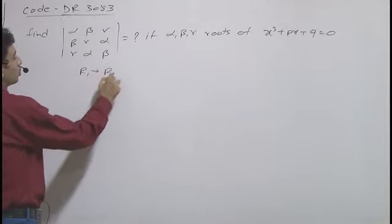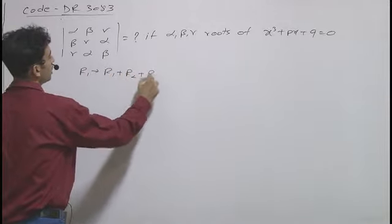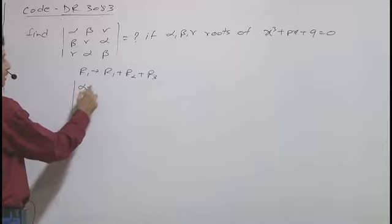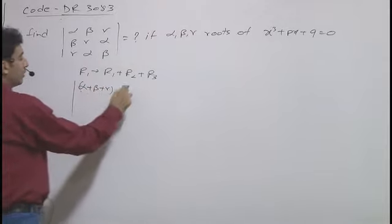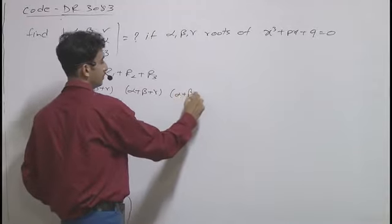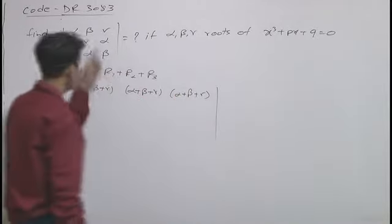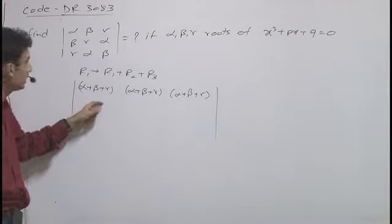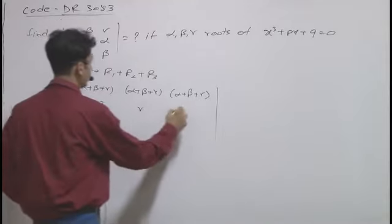Row 1 goes to row 1 plus row 2 plus row 3. Then we can write alpha plus beta plus gamma, alpha plus beta plus gamma, alpha plus beta plus gamma. First row will transform into this. Second row and third row will remain same.